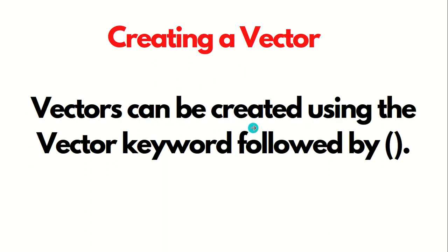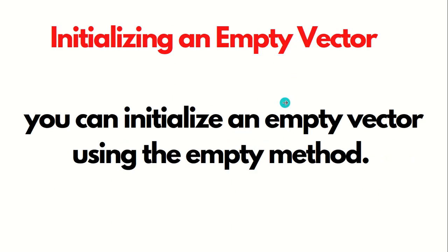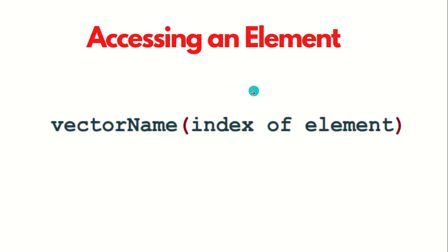So this is the advantage we get with the vector. How can we create a vector? Vectors can be created using the vector keyword followed by parentheses — the same way we discussed for list. To initialize an empty vector, we can use the empty method. To access an element, we use the vector name followed by the index in parentheses.